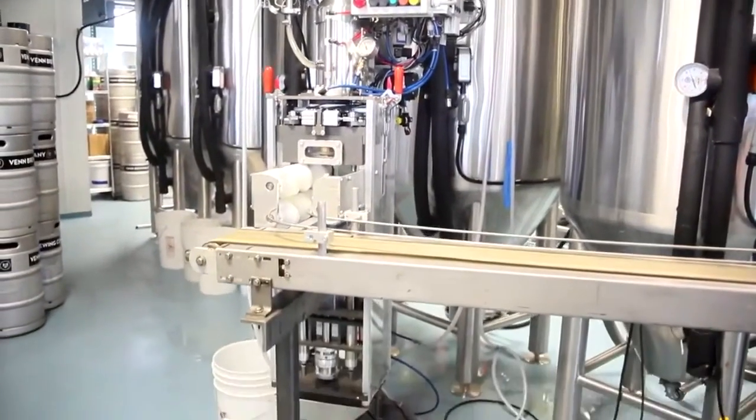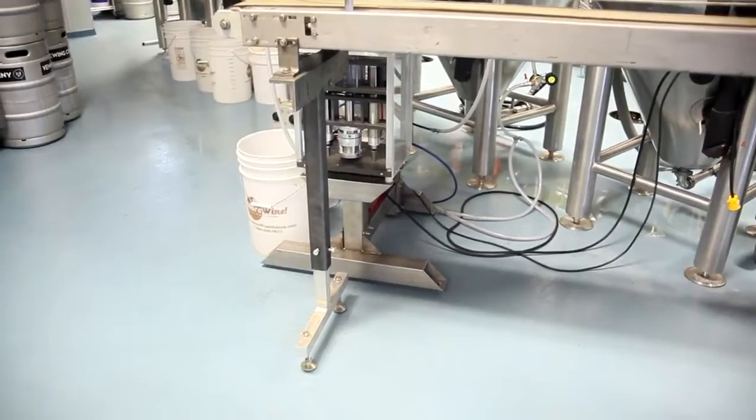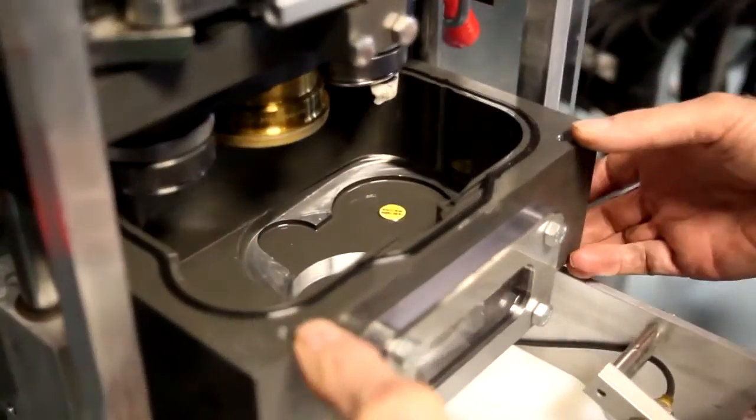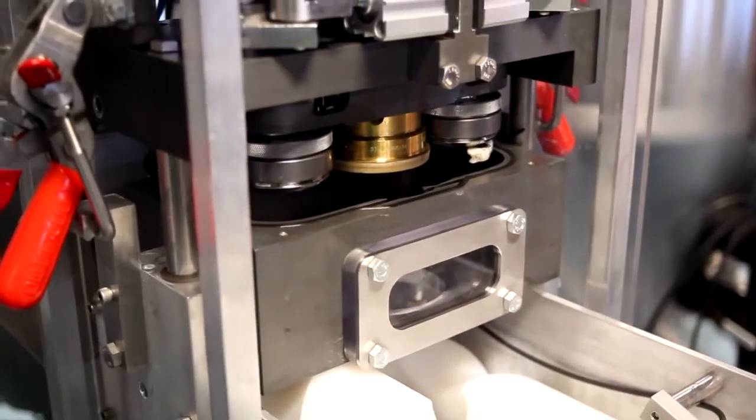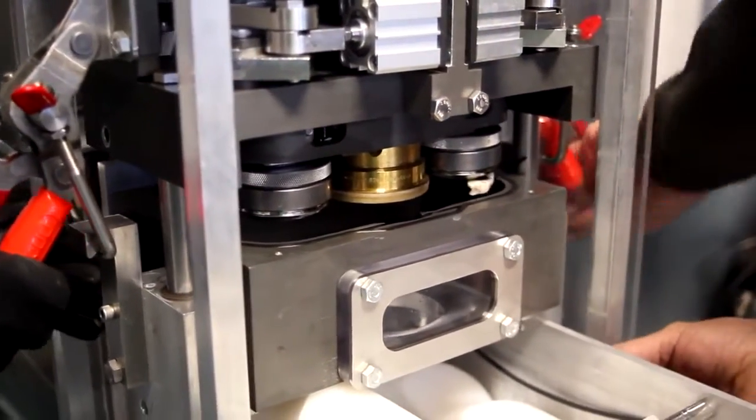This is the modular canning line by Northland Automation and Engineering. In this demonstration it has been set up to fill crawlers but it can be used to fill standard 12 ounce or 16 ounce cans as well.